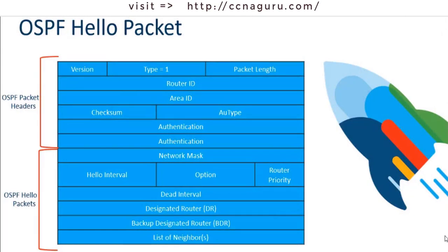Let's jump into the OSPF Hello packet, broken into two sections: the OSPF packet header and the OSPF Hello packet section. The Hello packet is used to discover OSPF neighbors and maintain neighbor adjacencies. Hello packets include parameters that must be agreed upon for two OSPF routers to become neighbors. They are also used in the election of the DR (designated router) and BDR (backup designated router), but only on multi-access networks using technology like Ethernet — point-to-point does not use DRs and BDRs.